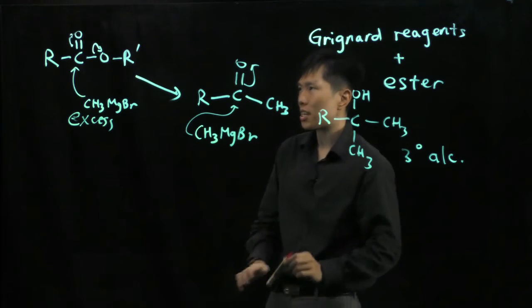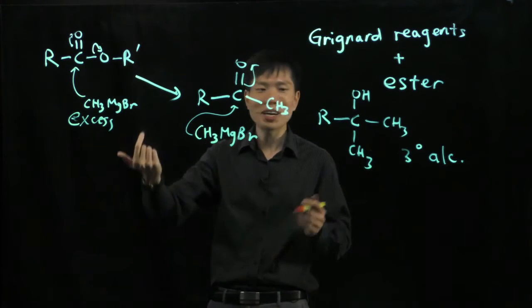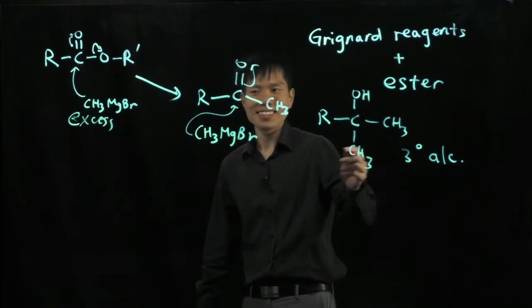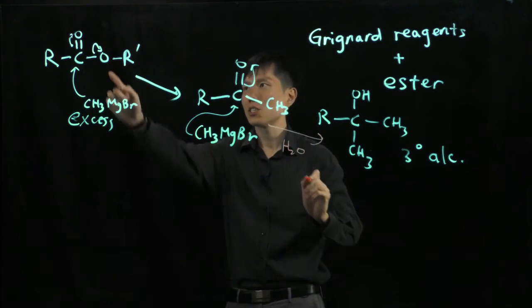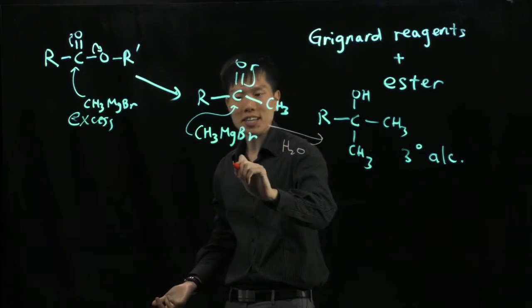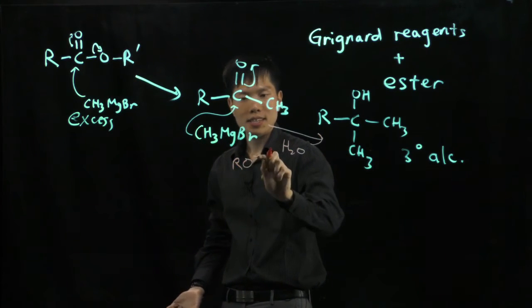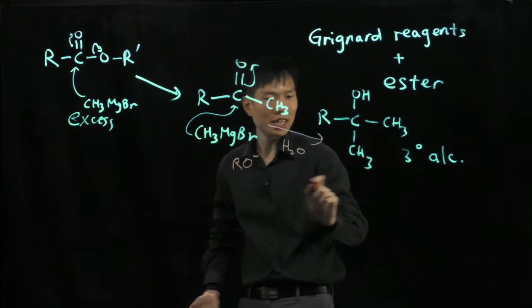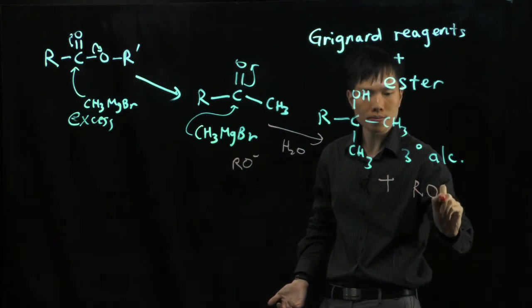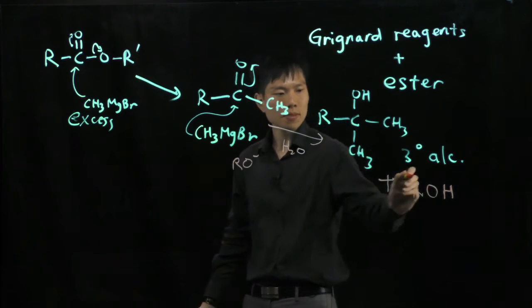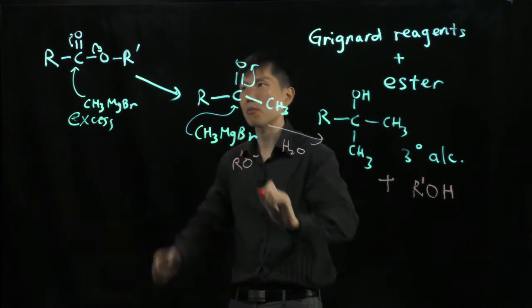You might be asking, what happened to this RO minus? At this step, we put water there. So the RO minus, which is the alkoxide, can be protonated by the water. So the byproduct here is your alcohol, R prime, coming from here.